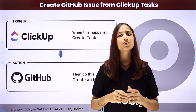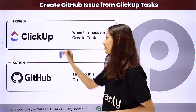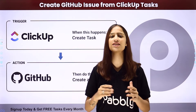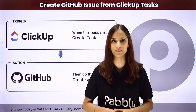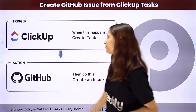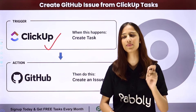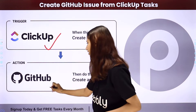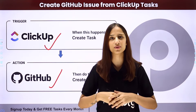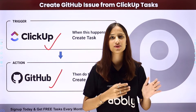To do this, I need to build an integration between these two applications, for which I will be using Pabbly Connect, where my trigger application will be ClickUp and my action application will be GitHub. Follow me through the screen to learn more about this integration.